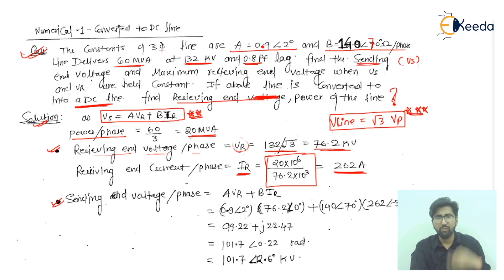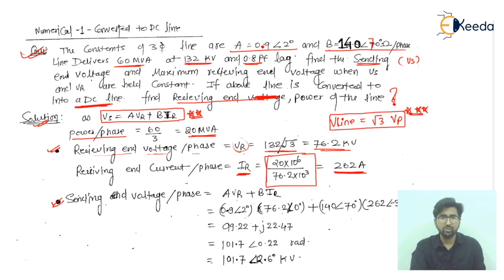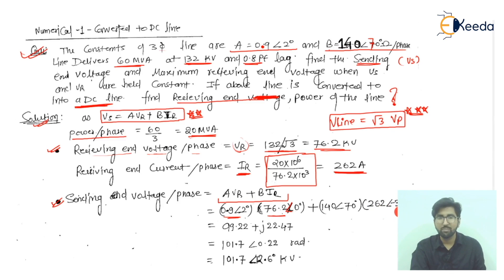Now we find the sending end voltage per phase using VS = A·VR + B·IR. We put in A = 0.92 ∠2°, VR = 76.2 ∠0°, B = 140 ∠70°, and IR = 262 ∠−36.87°. After multiplication, we get values in polar form: 162.30 ∠(some angle) and another term, which we then convert to rectangular form.